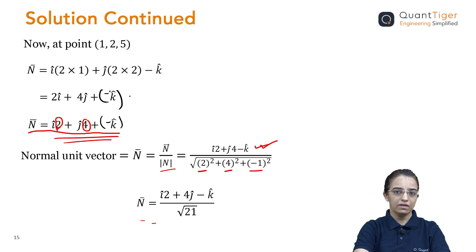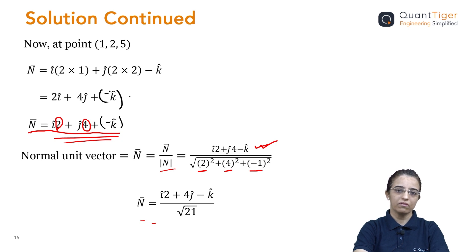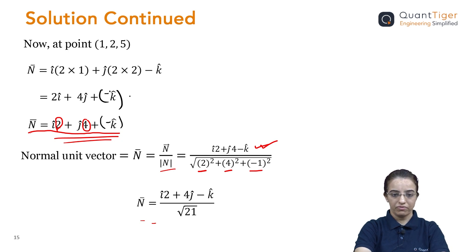So, first of all, you should know what the del operator is and how we represent it. With that, we take a product with the given scalar function — which will be given in the question. Then you plug in the x, y, z values of the given point. Then you will get the normal vector at that particular point. When finding the unit vector, divide by the magnitude — and you will get the normal unit vector at the given surface or equation.